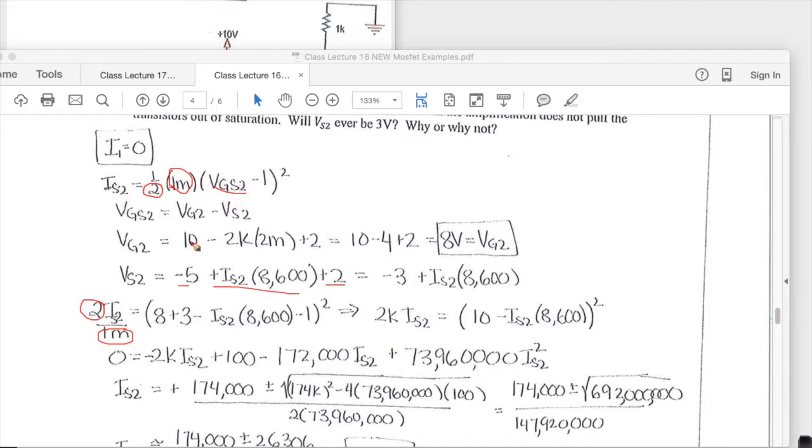The VGS2 we're going to plug in VG2 which is 8, so we get 8 and then we're going to take a minus of this whole quantity. So this becomes a plus and this one becomes a minus and then minus this is VT and that's all squared. So now the 2 over 1 milli becomes 2K and then this becomes 8 plus 3 minus 1 is 10 and then the minus this quantity and that's all squared and so we multiply this out to get this squared.